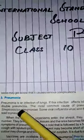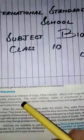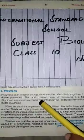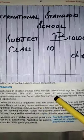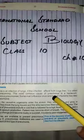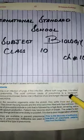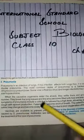Basically, pneumonia is an infection of the lungs, and if the infection affects both the lungs then it is called double pneumonia.